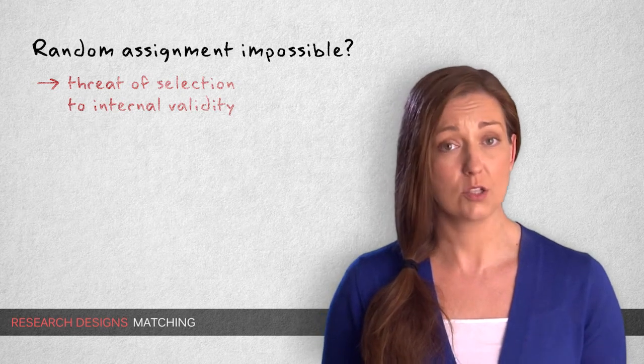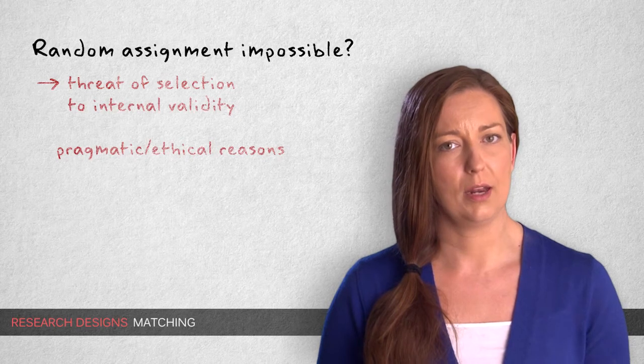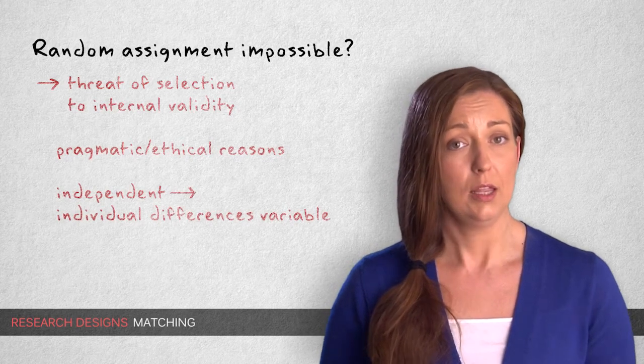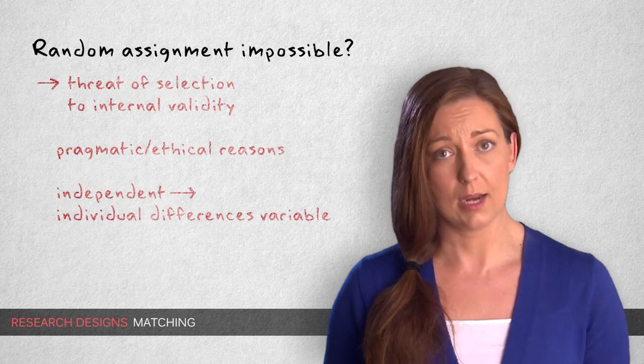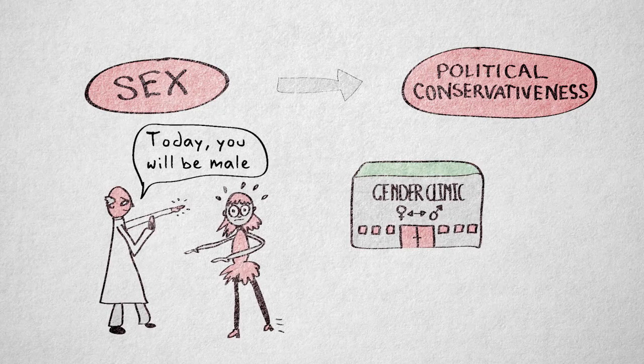Random assignment can be impossible due to pragmatic or ethical reasons, but also when the independent variable is an individual differences variable. For example, if we want to investigate the effect of sex on political conservativeness, we can't randomly assign people to be female or male.